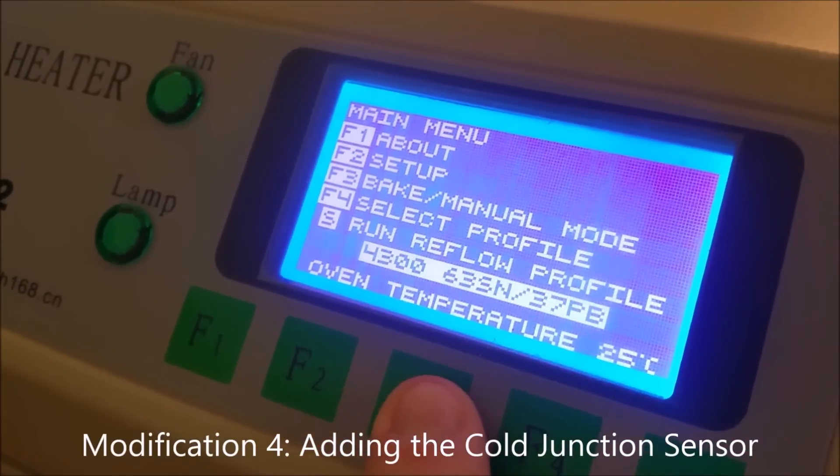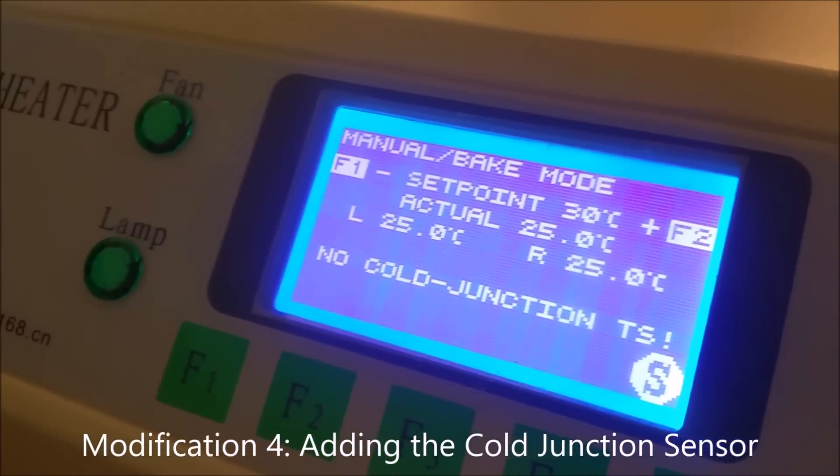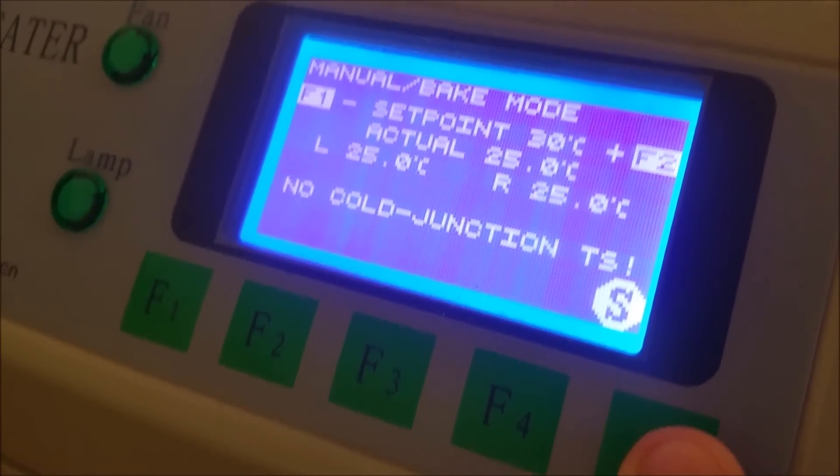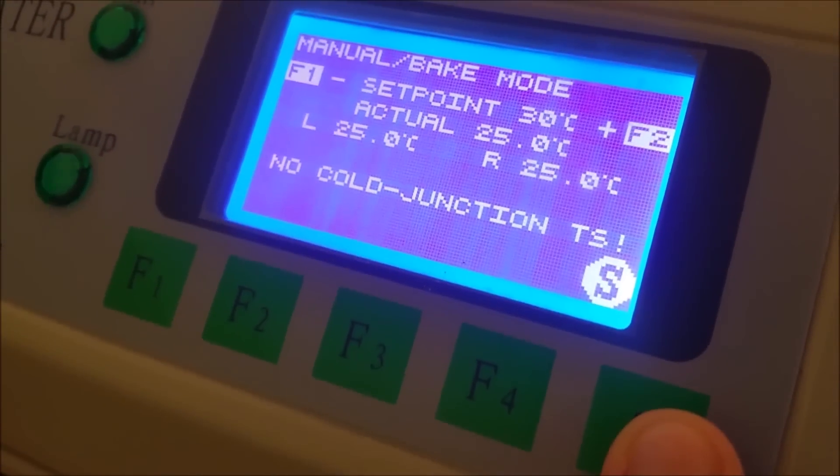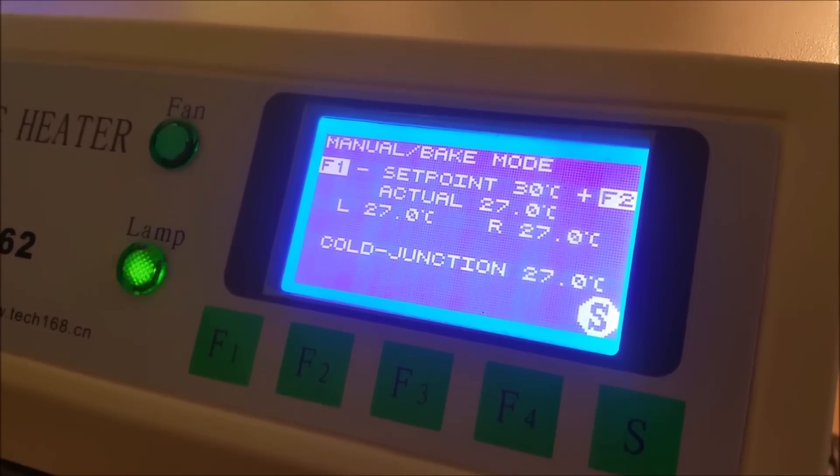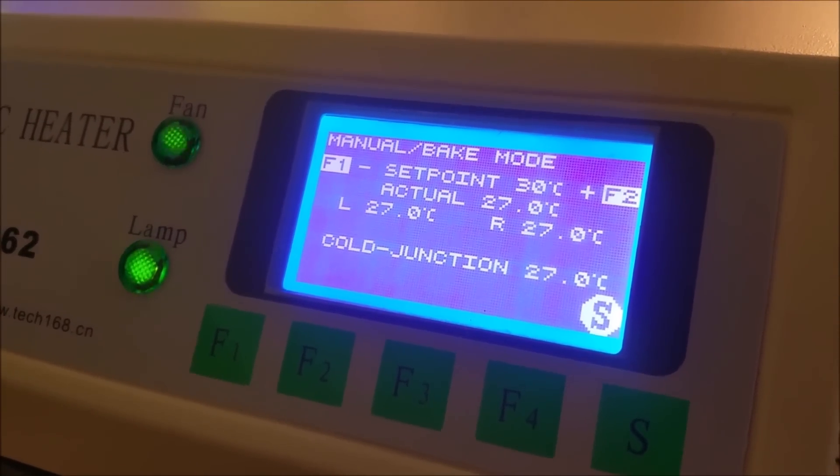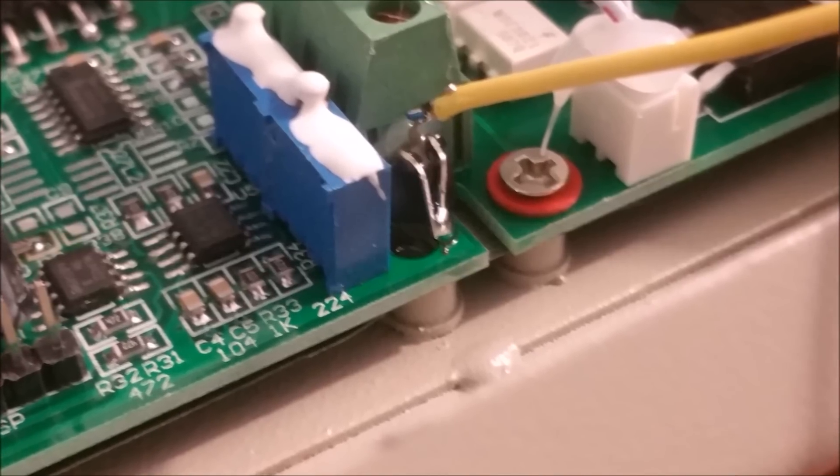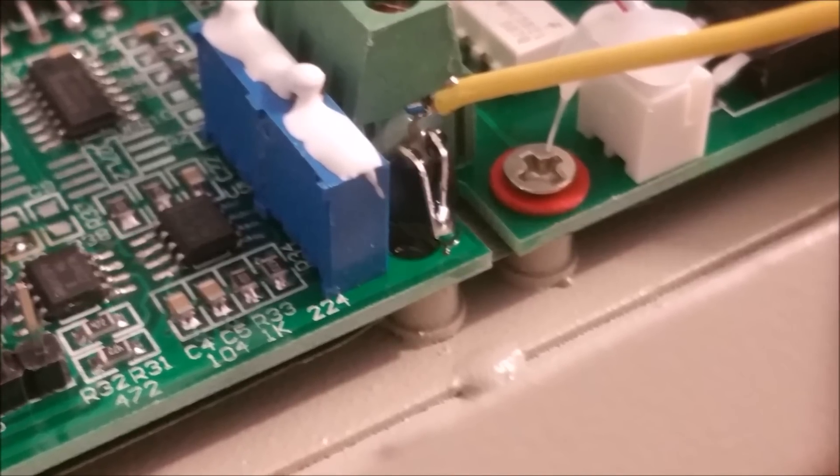Originally, the oven hardware came with no measurement of the cold junction for the thermocouples and just assumes that the point is always at 20 degrees Celsius. This is pretty sloppy because at this point it can actually vary quite a bit, which is a big reason for the oven's poor performance. In this mod, you'll be adding a temperature sensor to the oven, which in turn is going to be used by the new firmware that we flashed to the part. The sensor you need for this mod is called the DS18B20.